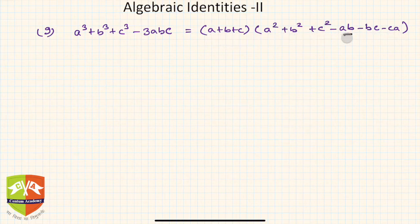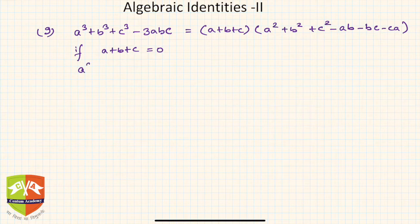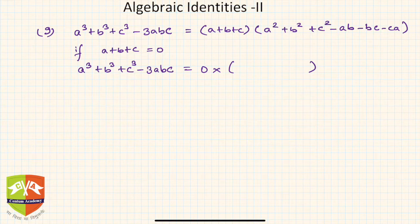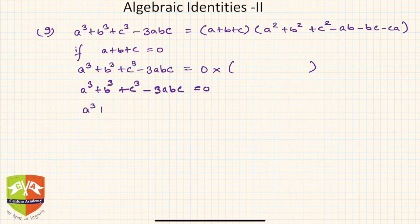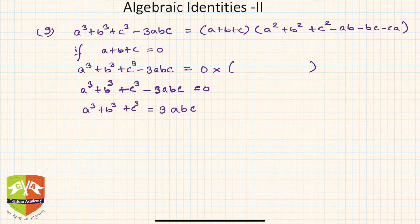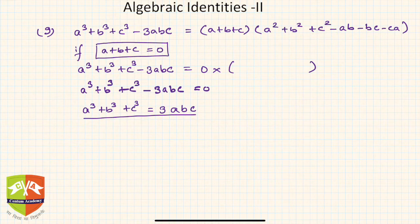There is a special case of this identity. If a plus b plus c equals zero, then a cube plus b cube plus c cube minus 3abc equals zero times whatever is in the bracket, which gives zero. Hence a cube plus b cube plus c cube equals 3abc. This is a very important result, but only when a plus b plus c is zero — otherwise it does not apply.